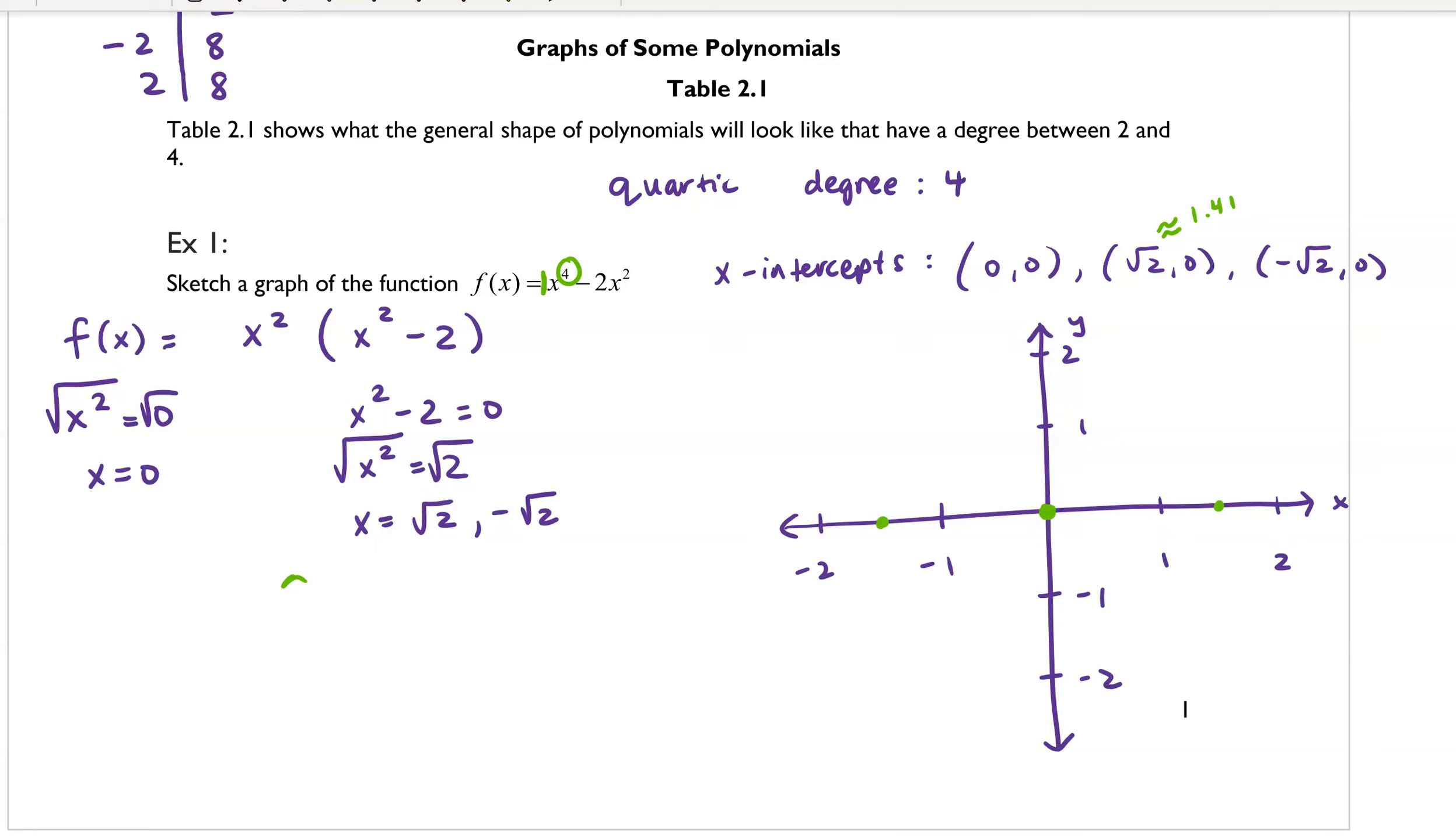To help us further figure out the graph, why don't we plug in or evaluate f of 1 to see what that's going to plot to on the graph. So if I plugged in 1, we'd get 1 to the 4th minus 2 times 1 squared. And then that would simplify to 1 minus 2, which is equal to negative 1. So we know that f of 1 is equal to negative 1. And it's going to be the case that f of negative 1 is also equal to negative 1. So go ahead and plug that in just to double check and see that that is in fact true. Don't necessarily take my word for it.